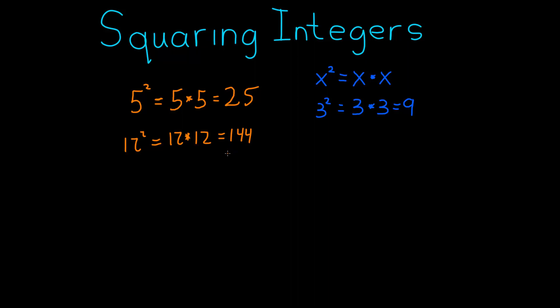This is squaring integers. Now let's go and do a little bit of extra credit. There are other things that you could square. You could square things like 0.5. And if you square that, 0.5 times 0.5 is going to be 0.25. So there are lots of different things you could square.